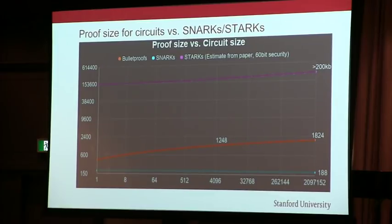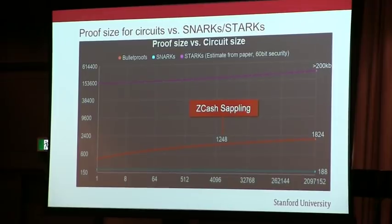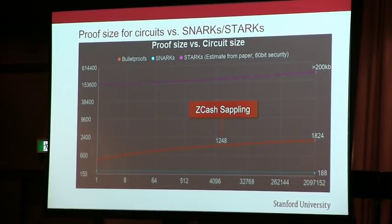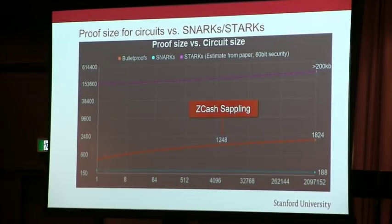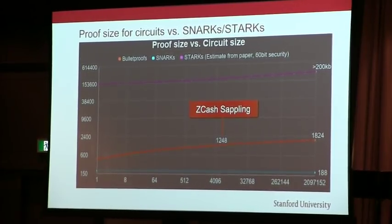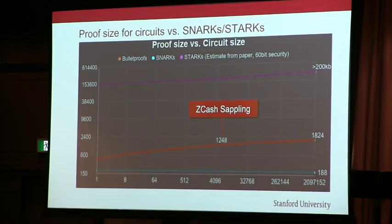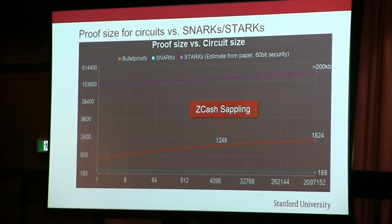For the Zcash Sapling circuits, the proofs are roughly 1.3 kilobytes. That's maybe reasonable — if there were no SNARKs, we would probably be willing to accept this. There are also STARKs, which have come out, and asymptotically they're also logarithmic or log-squared, but they're quite expensive practically, and the proofs are over 200 kilobytes.